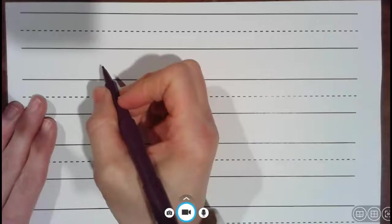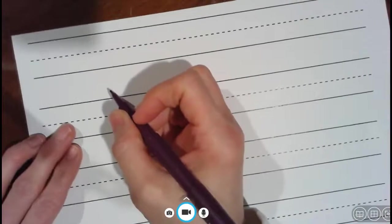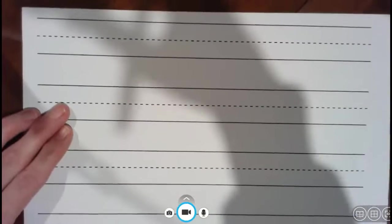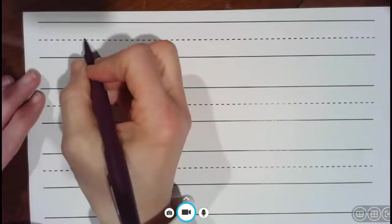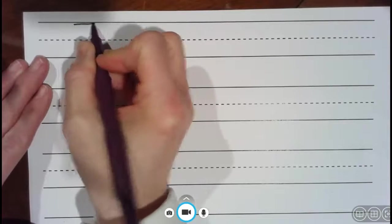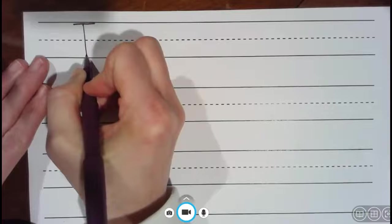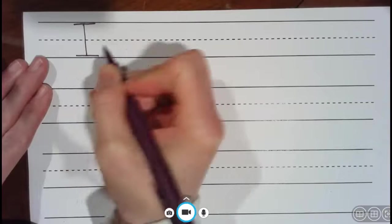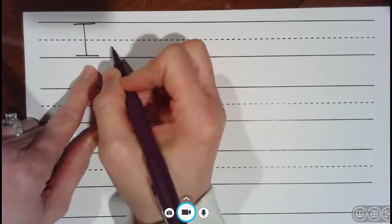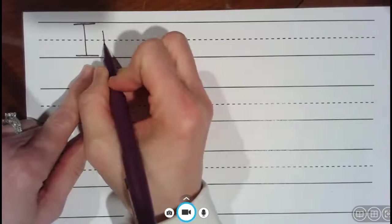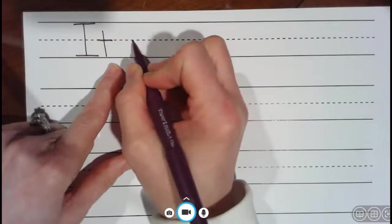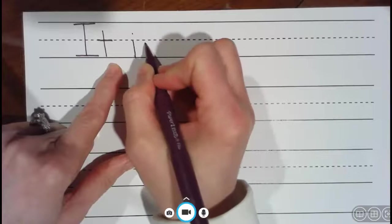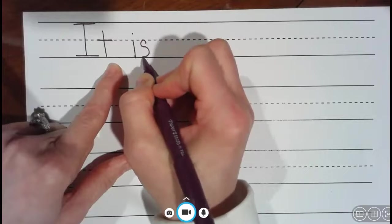All right, so let's write some sentences. Oh I know, it's snowing outside today so I'm going to write it. Now how do we start a sentence? What do we do with our first letter? We have to make it into a capital letter. That is correct.